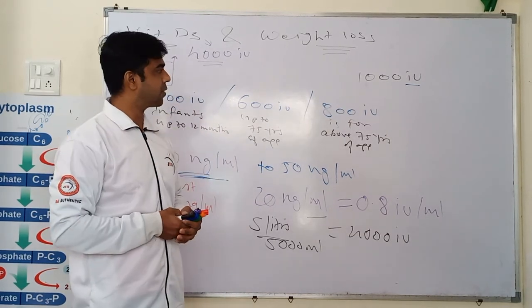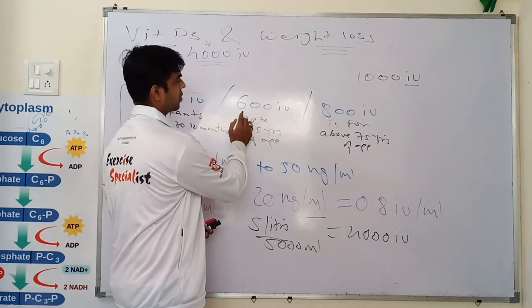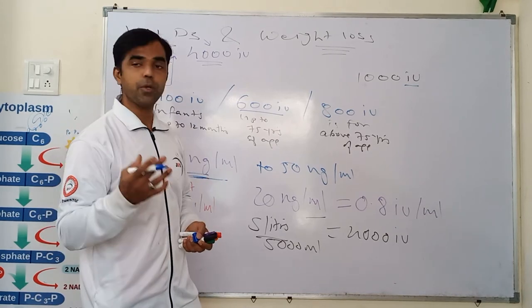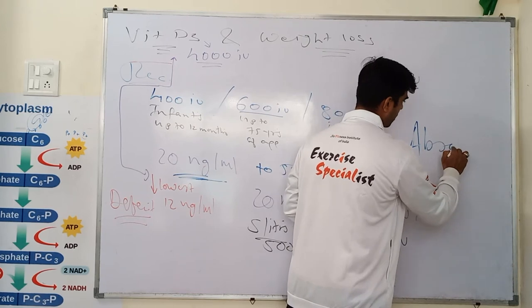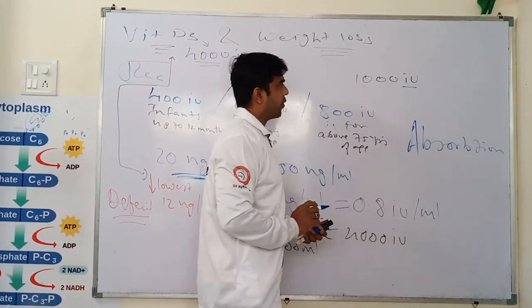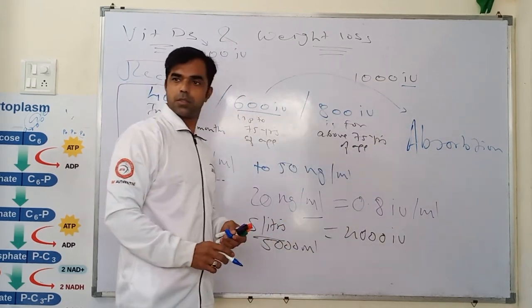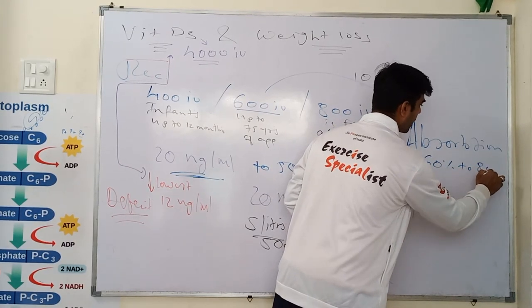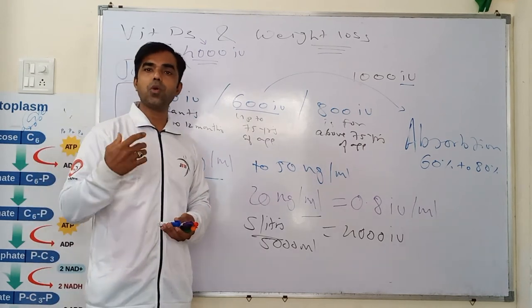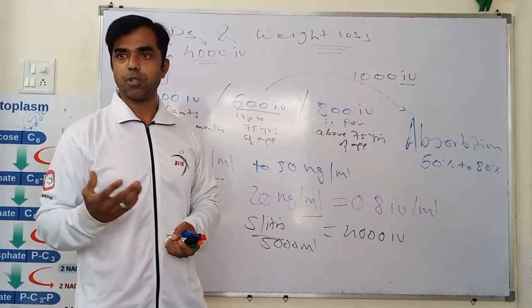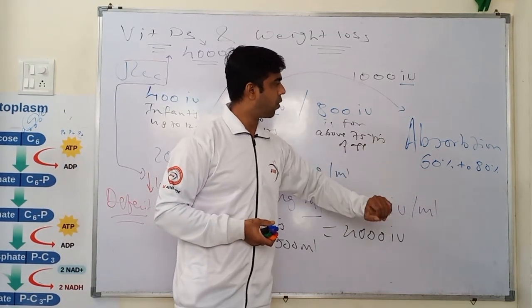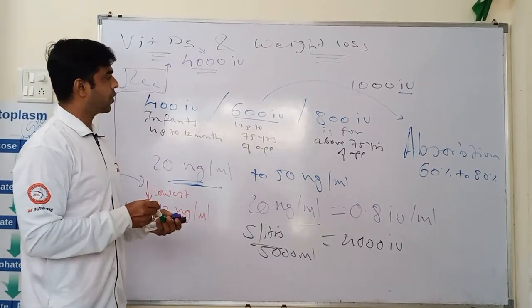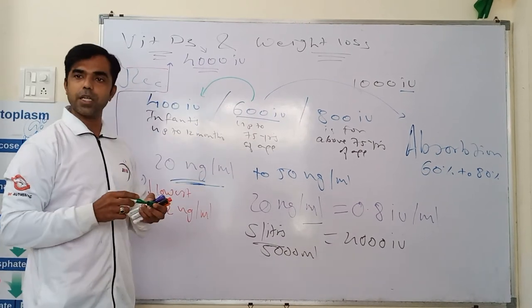Why? Sometimes what happens, you believe that you are taking this range, the absorption sometime is going to be a problem. Whenever you will take this range, the absorption will be from 60% to 80%. And if some people do have the gut issue, absorption problems, then this will go from somewhere 40 to 60%. So even though you take 600 international unit, you will end up getting 400 international unit.